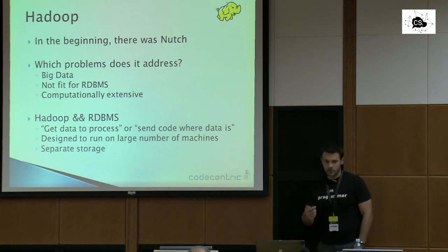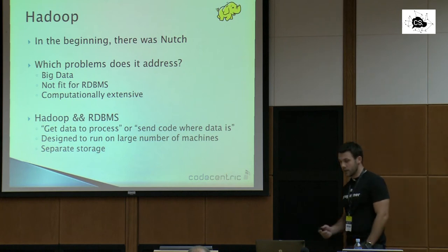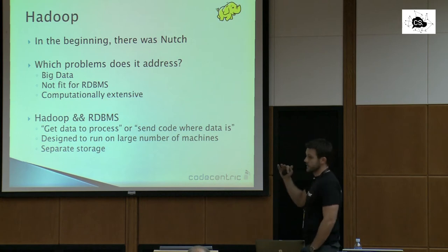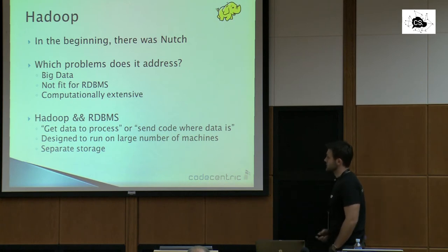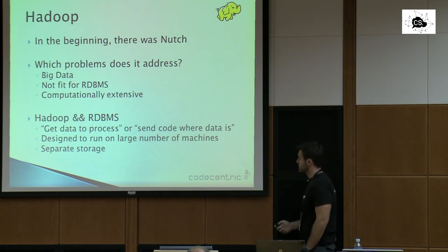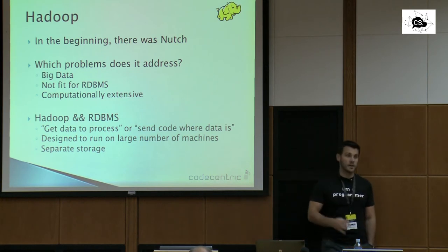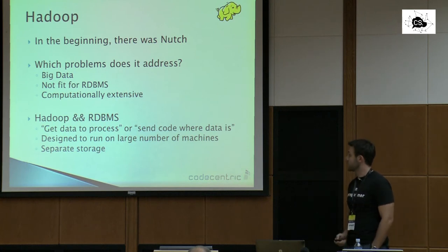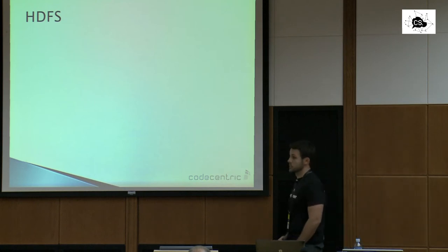Comparing Hadoop to traditional relational databases: one sentence really describes it — it's not 'get data I want to process,' it's more like 'send the code where the data really is and let it run there.' Hadoop is designed to run on a large number of machines that don't share any kind of storage between themselves.